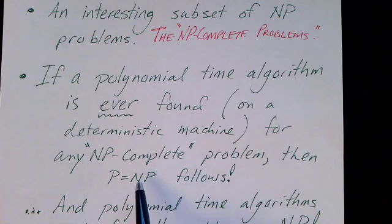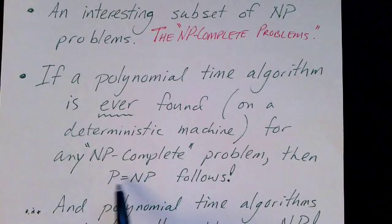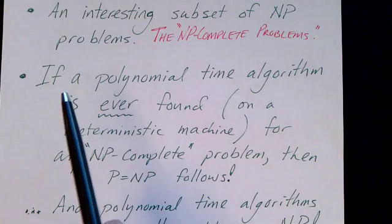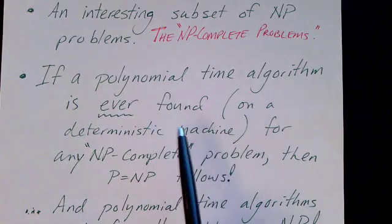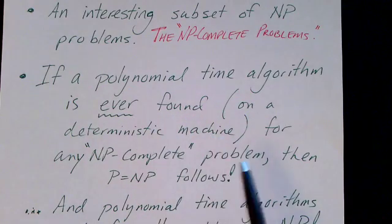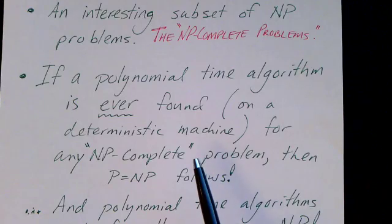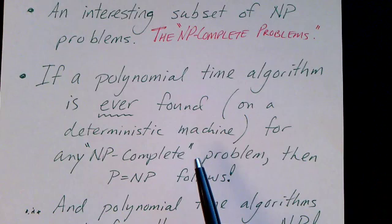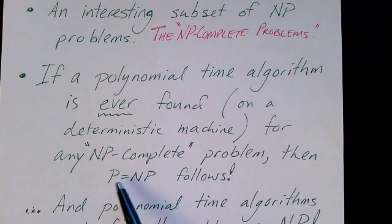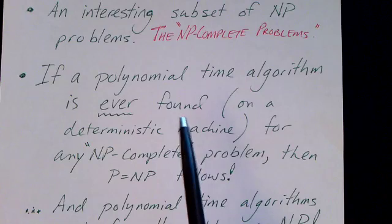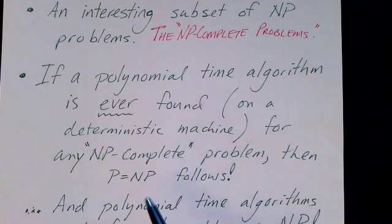Most people who think about this probably believe that P does not equal NP. So let me just say this again. If a polynomial time algorithm is ever found for a deterministic machine for any problem in this category that we call NP-Complete, then it solves the question of whether P equals NP in a way that nobody expects it to be solved. So it indicates that if a problem is NP-Complete, it's probably the case that you're not going to find a polynomial time algorithm.